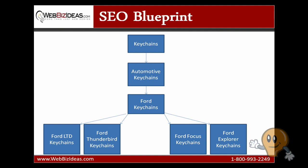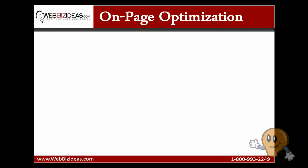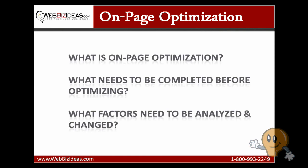If you want to break down search engine optimization, or SEO, it really comes down to content and links. On-page optimization especially is something that you can control — it's on your website, you can change it around and have a direct effect on it. We're going to get into on-page optimization next, discuss what it is, what needs to be completed, and the main factors that need to be analyzed or changed, because a lot has changed over the years.